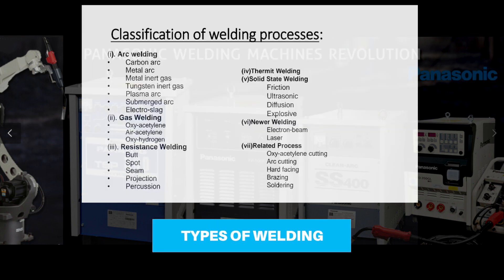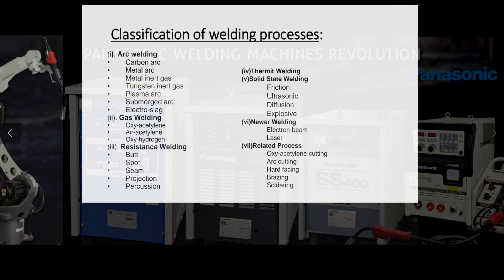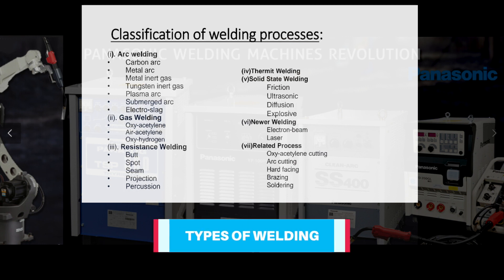Classification of welding: how many types are there? One is arc welding. Arc welding uses electricity to produce an arc and light. Types include carbon arc welding, which we call gouging, and metal arc welding.